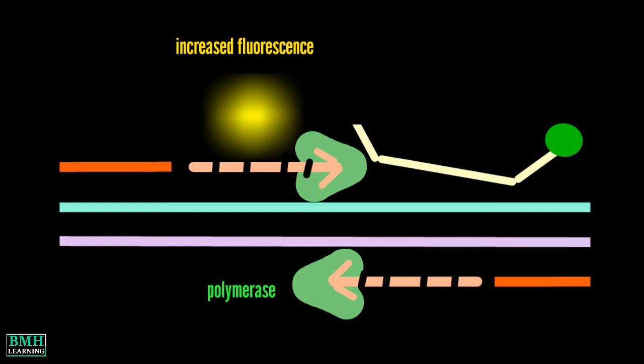Additional reporter dye molecules are cleaved from their respective probes with each cycle, resulting in an increase in fluorescence intensity proportional to the amount of amplicon produced.